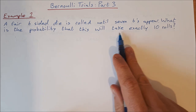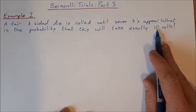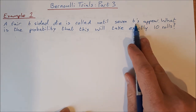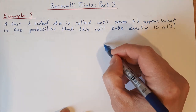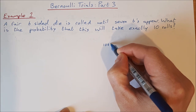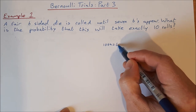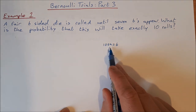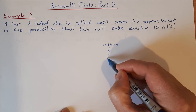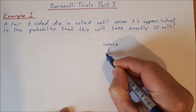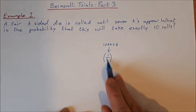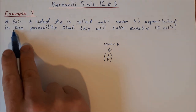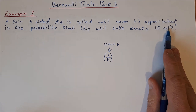If we want this to take exactly ten rolls, that means we need to get a six on the tenth roll. The probability of getting a six on that roll is one over six. That's the probability of getting a six on that roll regardless of what has happened before it.